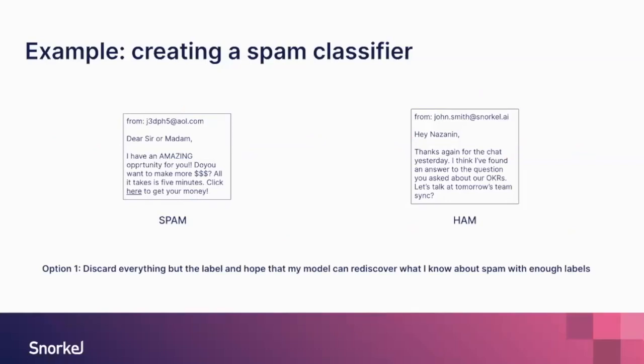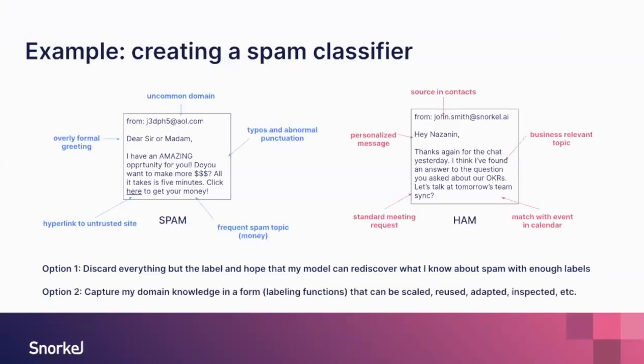To build this spam classifier, there are two options. You could just keep the labels — spam or ham — and throw lots of examples into a model to learn. However, a second, more preferred option is to capture the domain knowledge in a form that can be scaled, reused, and adapted. We want to keep all the logics so that if someone asks why something was labeled as spam, you can quickly explain the reasoning behind that particular label.